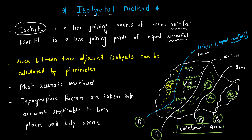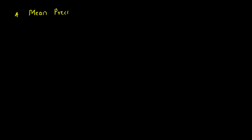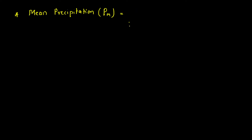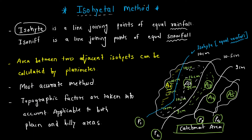Once we understand the isohyets and the areas, the last thing is to find the mean precipitation. For the leftmost strip A1, since there is no isohyet to the left of P1, we take only P1 multiplied by A1, similar to the Thiessen polygon method.